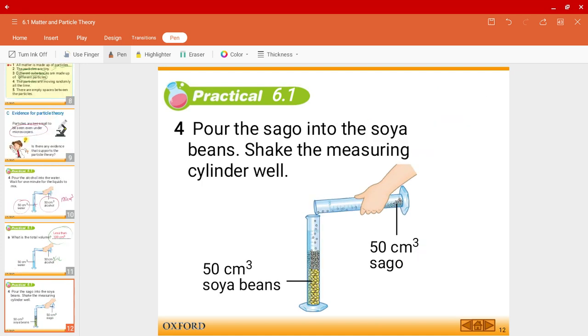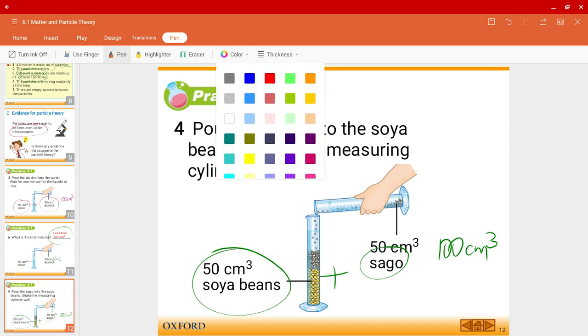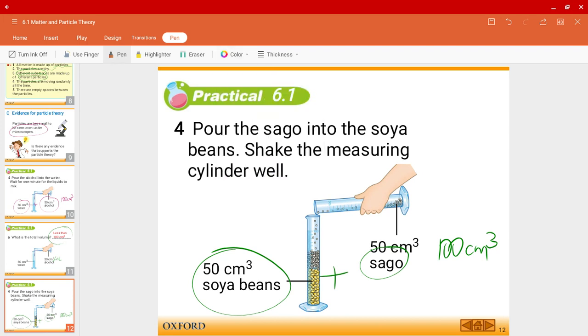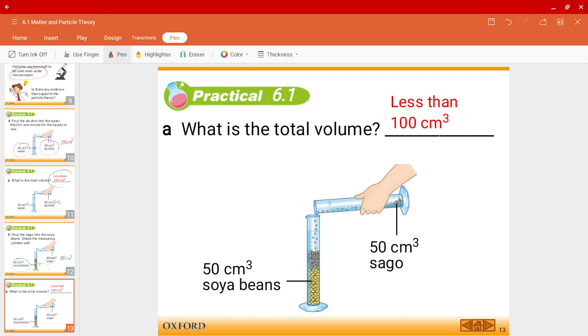Now let me show you another example. For example, we have 50 cm3 of soybeans and 50 cm3 of sago. Now when you mix them together, you'll probably think that in total, when I add these two together, I would get 100 cm3. So that's what would a normal person say, right? However, actually, the total volume is also less than 100 cm3. Why is this the case then?